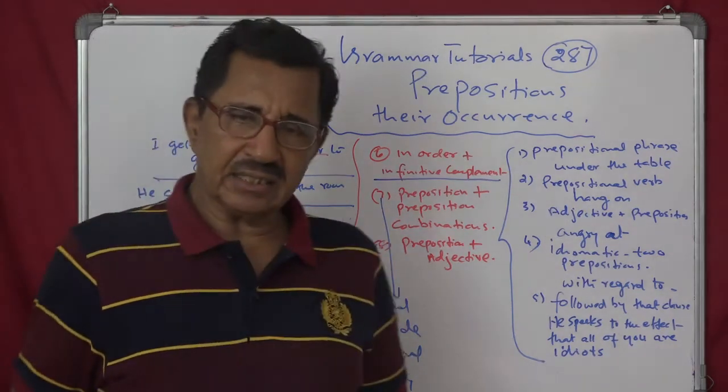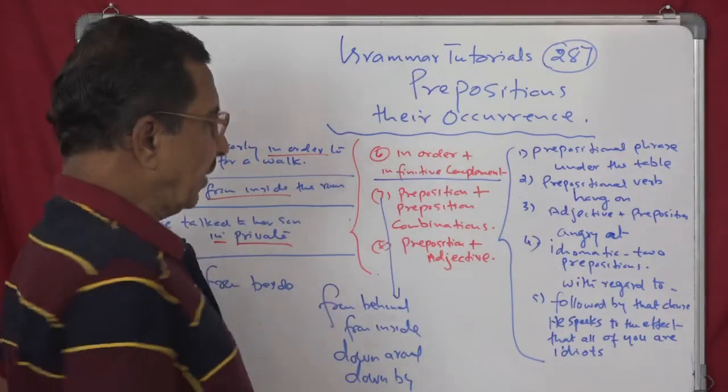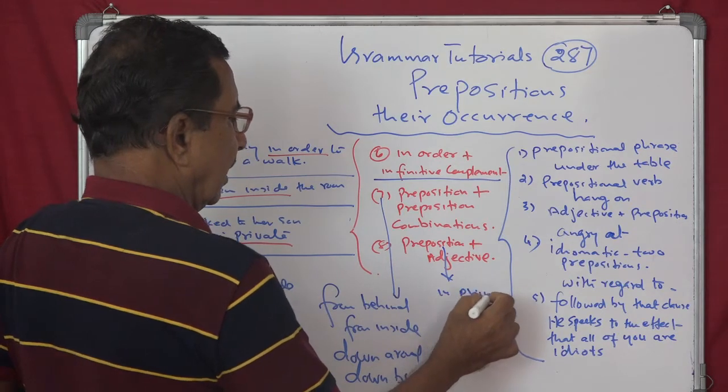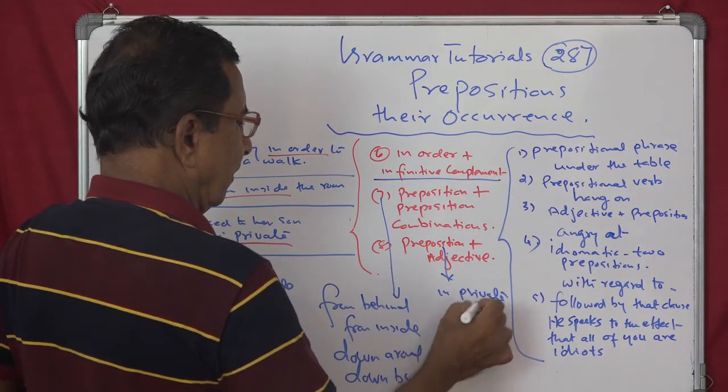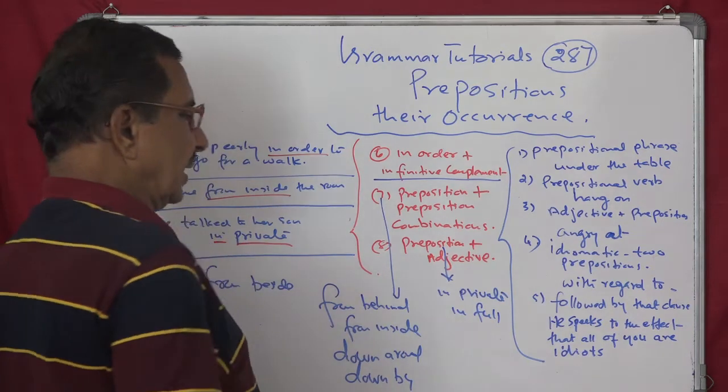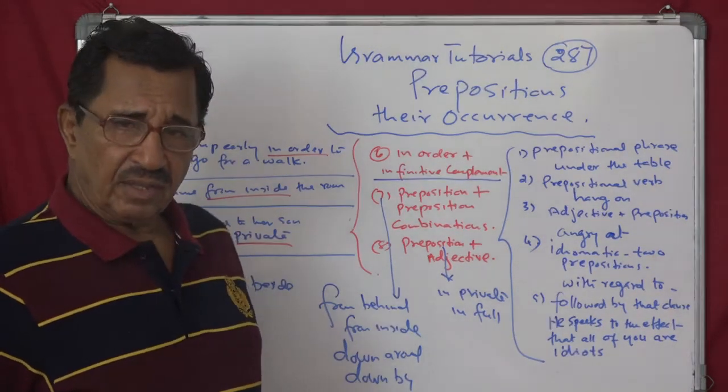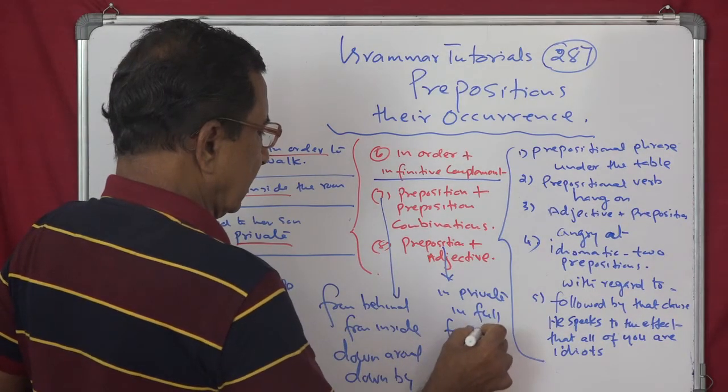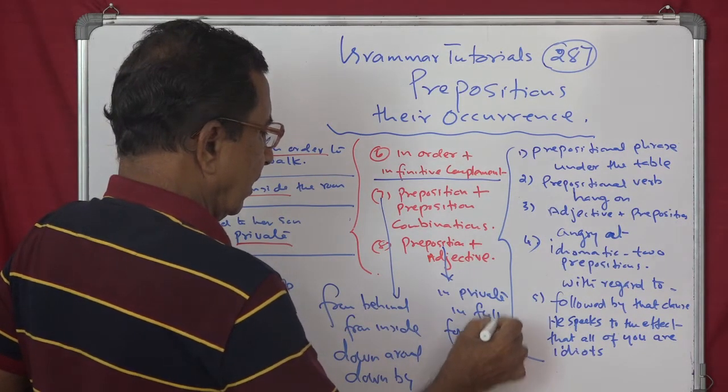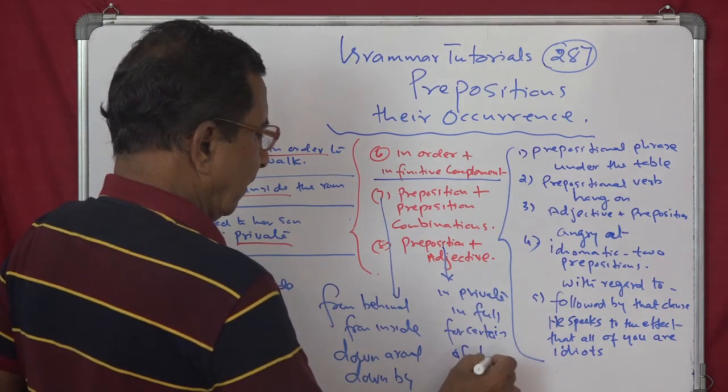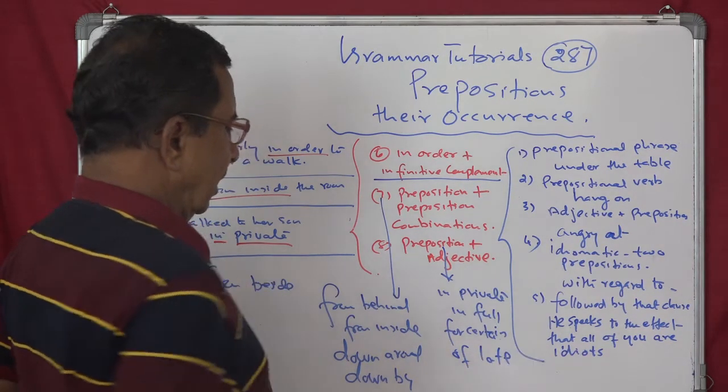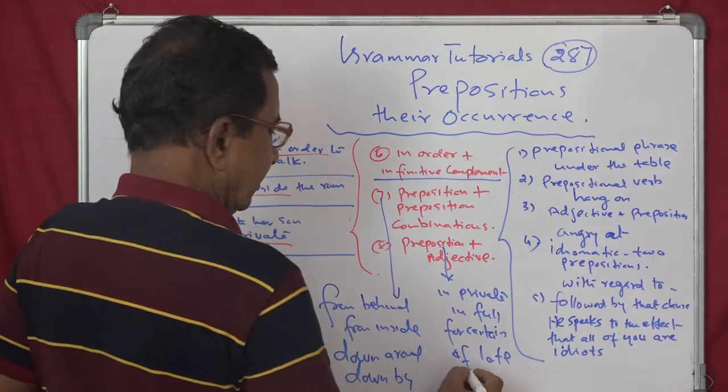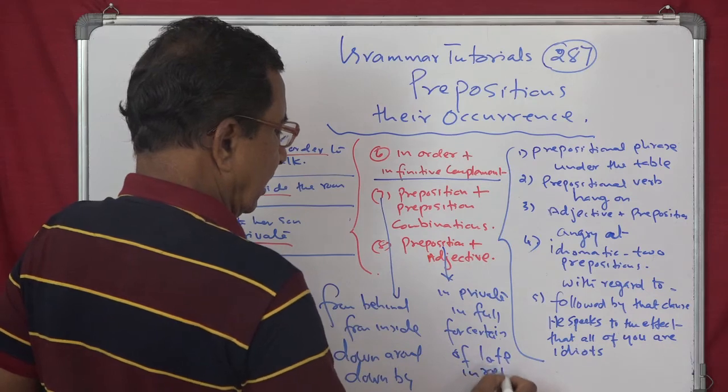These are preposition to preposition. And then preposition adjective we have got. In private. In private. In full. In full. Then you have got for certain, of late. For certain. Of late. So these are preposition with the adjectives. In return. In return.